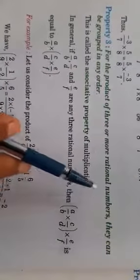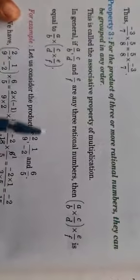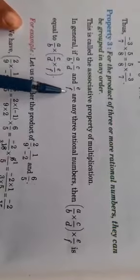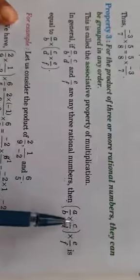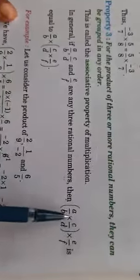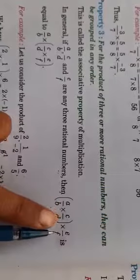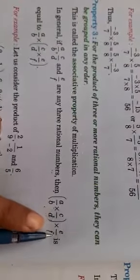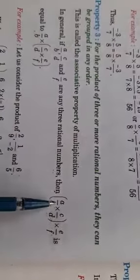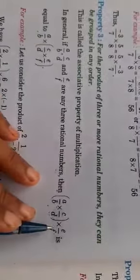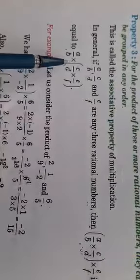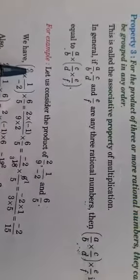Property three: for the product of three rational numbers, they can be grouped in any order. See this property carefully and make notes in your copy. In general, if a upon b, c upon d, and e upon f are any three rational numbers, then placing a upon b into c upon d in a bracket, multiplied by e upon f outside the bracket, is equal to a upon b multiplied by the bracket of c upon d into e upon f. Please look at the example given.